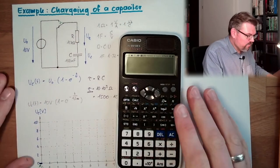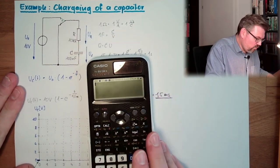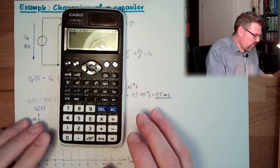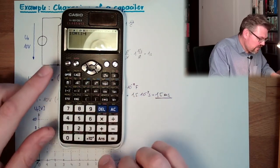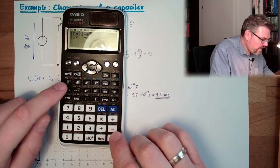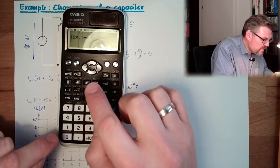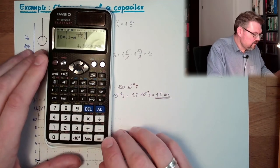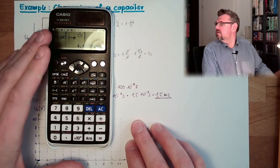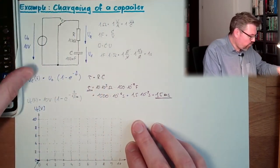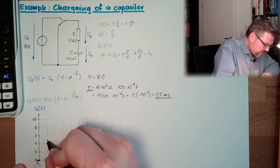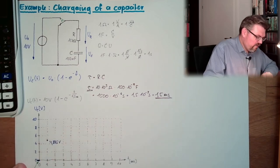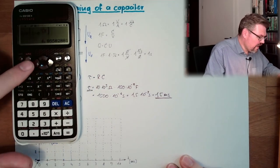Now let's calculate for t = 1 millisecond. We have 10 × (1 − e^(−1/1.5)). The result is 4.865. So after 1 millisecond, we are at 4.865 volts — that's about 48.65% of the final value.